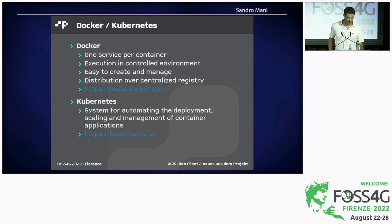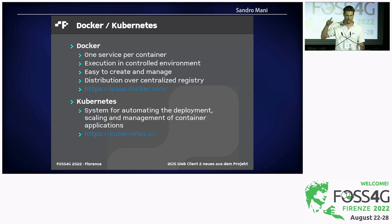A quick note about Docker. The big advantage is you have one service per container, so you can easily update one component by simply changing the tag version in the Docker configuration file. The services run in a controlled environment, so you don't need to worry about having the right Python version — that's already taken care of. You can easily create and manage them, and they are distributed over a centralized registry at Docker Hub. Kubernetes adds an additional level of complexity to automatically manage deployment and scaling of these container applications.